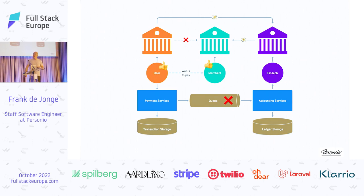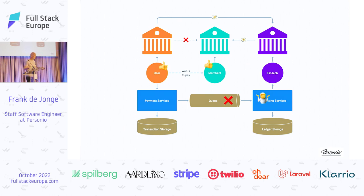The user and the merchant are happy. But if an event is not transmitted from service A to service B for whatever reason, things start to go wrong. The accounting service doesn't know about the payment, so it's not going to send the money. The user is confused because they paid, the merchant is angry, and the fintech looks bad. That's generally not a situation you want to end up in.